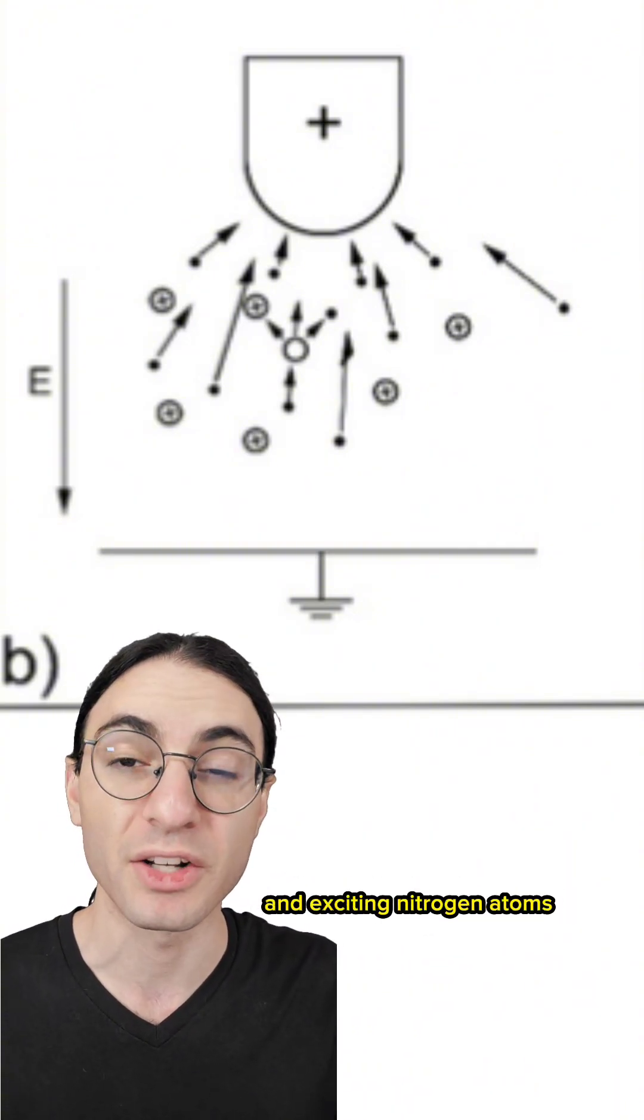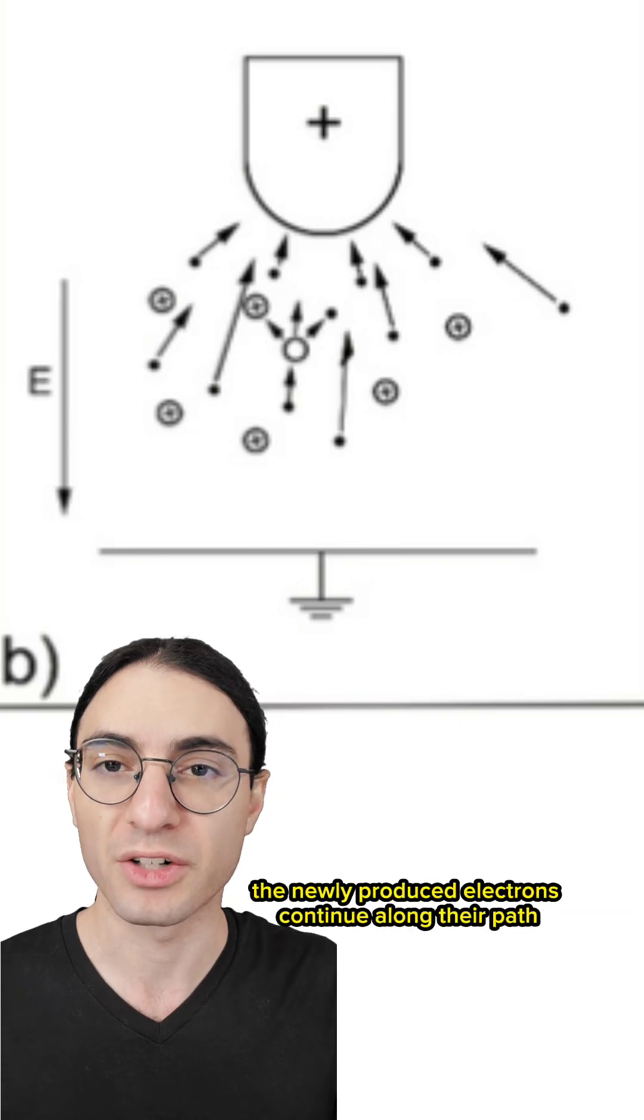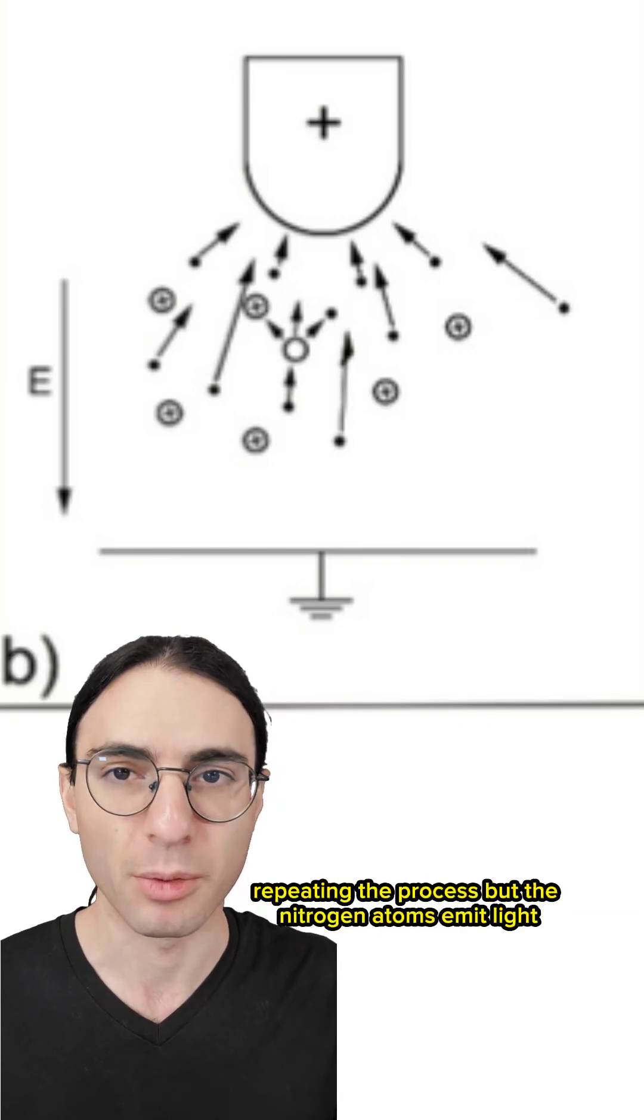knocking free more electrons and exciting nitrogen atoms. The newly produced electrons continue along their path towards the positive electrode, repeating the process.